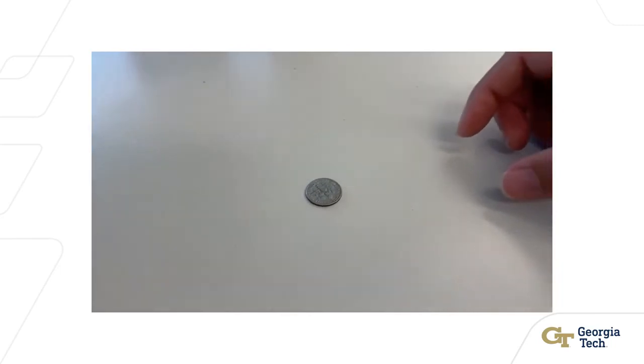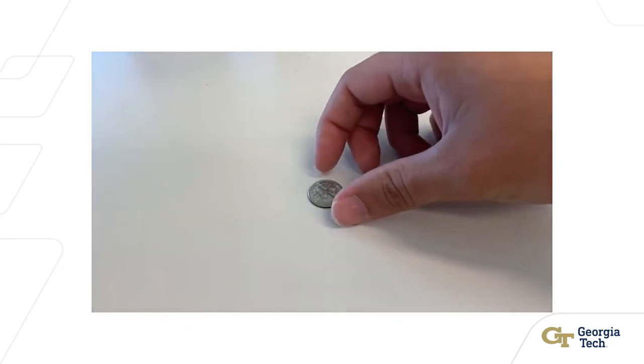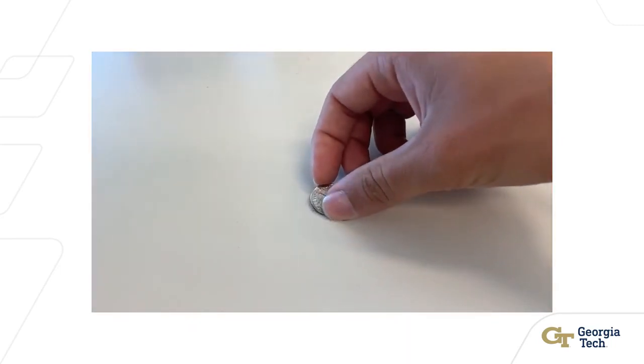To program our robot, we take inspiration from how humans grasp small objects. Notice how the person makes contact with the table first, and then they slide their fingertips to grasp the coin. We use a similar technique for the robot.